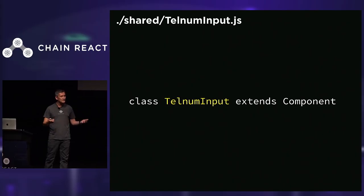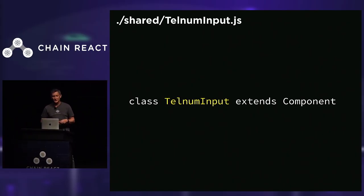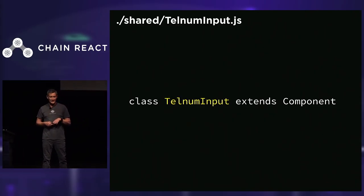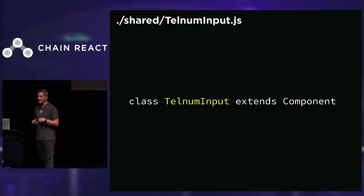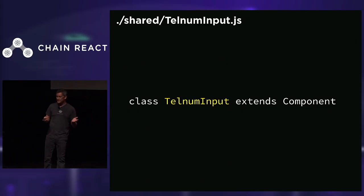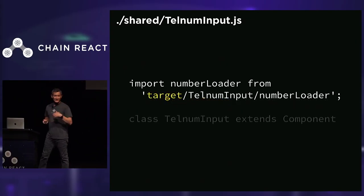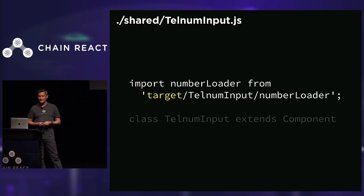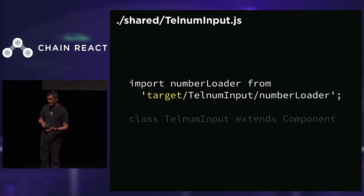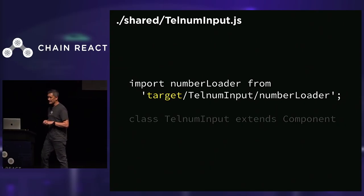So let's make this real and build a component together. We're going to build a component that accepts keyboard input and as you type, it formats it as a telephone number. First we start with the base shared implementation — we make a new file called telnuminput.js in our shared folder, and this new component just extends a basic component. We have an interesting import already: we're importing a number loader from our target alias, because it has to be loaded somewhat differently on the web versus React Native. Then we implement some functions — a componentWillMount that creates an instance of the number loader, and a helper format function that will be called from our platform-specific components, returning a formatted telephone number version of the text you typed.